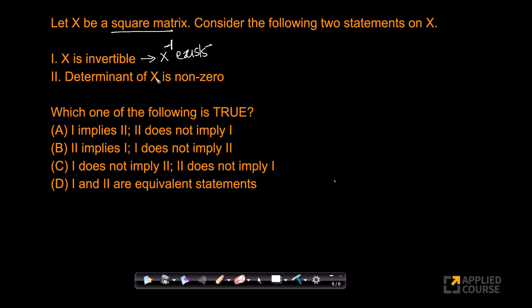The second statement is that the determinant of X is non-zero — det of X is not equal to zero. The question here is: which of the following is true? Does statement 1 imply 2, does 2 imply 1, and so on?